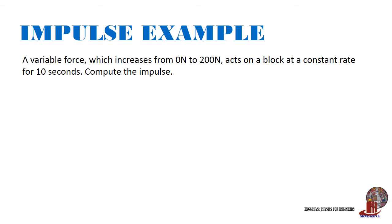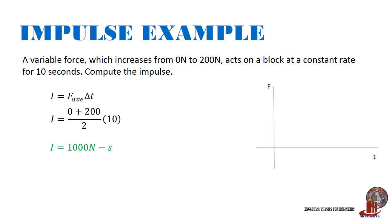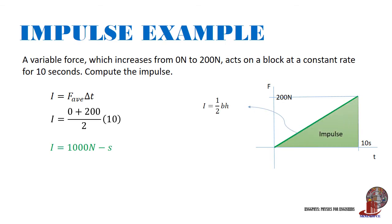The other example: a variable force which increases from 0 Newtons to 200 Newtons acts on a block for 10 seconds. Compute the impulse. With a variable force, impulse is solved using average force: 0 plus 200 all over 2, multiplied by 10 seconds, yielding 1000 Newton-seconds. Graphically, the force starts at 0 and increases to 200 Newtons, forming a triangle shape. The area is one-half base times height: one-half of 10 times 200, giving the same answer of 1000 Newton-seconds.